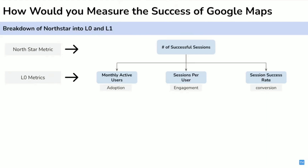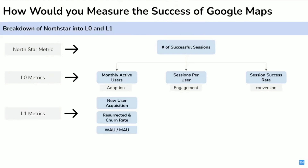Breaking it down further into L1 metrics: for acquisition, we track new user acquisition or user growth rate, user churn and resurrection rate. For stickiness of the platform, we can track DAU/MAU or WAU/MAU — both will tell you user stickiness on the platform.